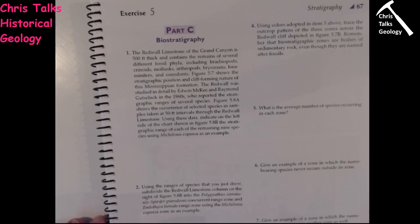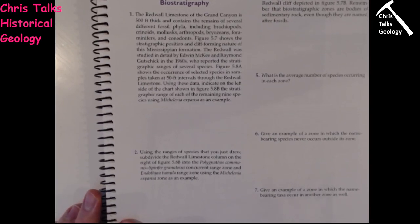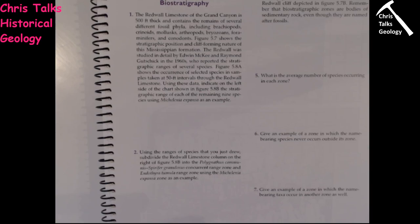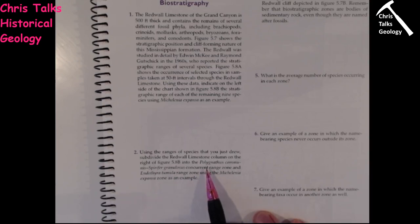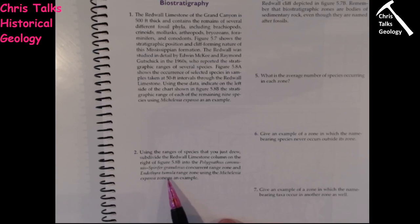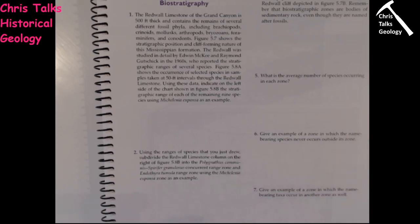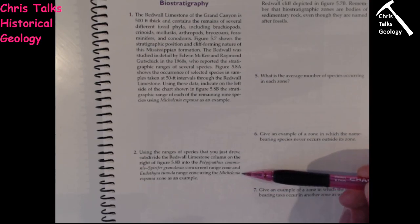That's part one of part C. For part two, using the species ranges we've just drawn, we're going to subdivide the Redwall Limestone on the right-hand column into several different range zones: a Polyganthus communis/Spirifer granulosis range zone, an Endothyrotimula range zone, and a Michalinier expanser range zone, which has already been provided. These range zones are defined by the first and last appearance of certain key fossils.